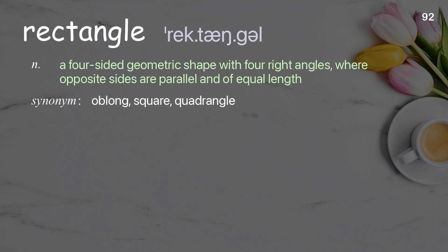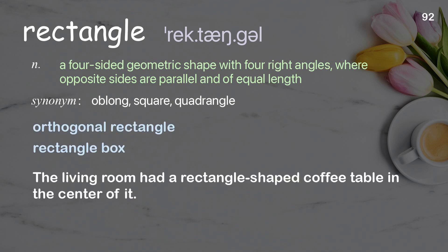Rectangle: a four-sided geometric shape with four right angles, where opposite sides are parallel and of equal length. Examples: orthogonal rectangle, rectangle box. The living room had a rectangle-shaped coffee table in the center of it.